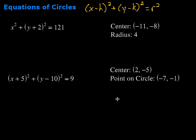So that's the general form where hk is the center of the circle, and the radius of the circle is r. So r is the radius, hk is the center.